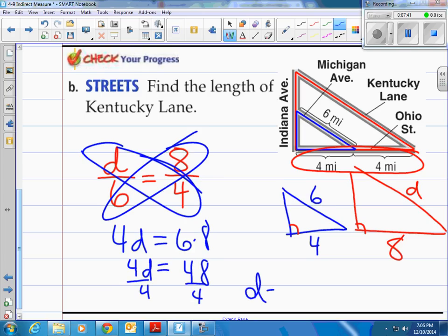And D will equal, how many times does four go into 48? 12. So this is actually 12 miles.